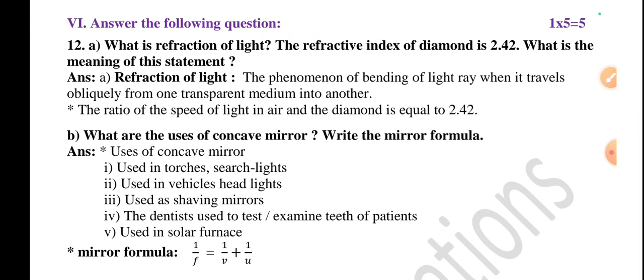Question number six section: Answer the following questions. It's a five mark question. Twelfth question, part A: What is refraction of light? The refractive index of diamond is 2.42. What is the meaning of this statement? Refraction of light is the phenomenon of bending of light rays when they travel obliquely from one transparent medium to another. The ratio of the speed of light in air and the diamond is equal to 2.42. That's why its refractive index is 2.42. We compare it to air medium to any other given medium. On the basis of that, we find out the refractive index.